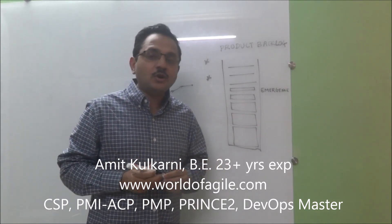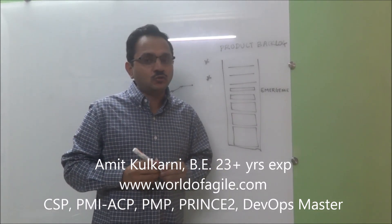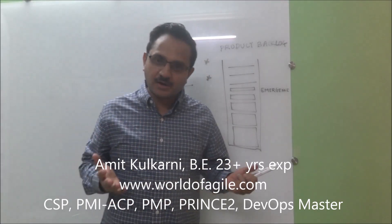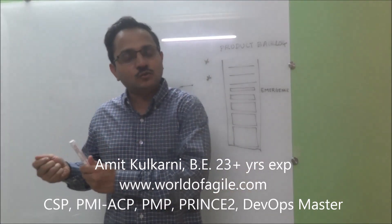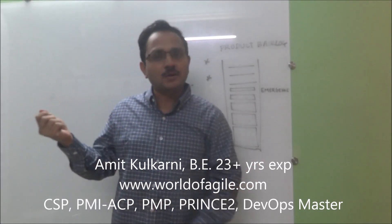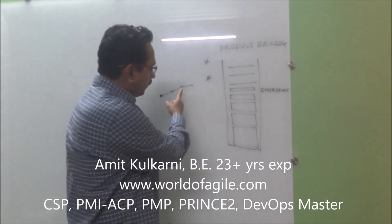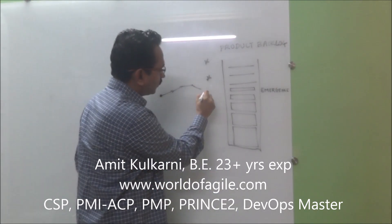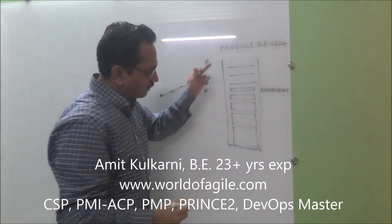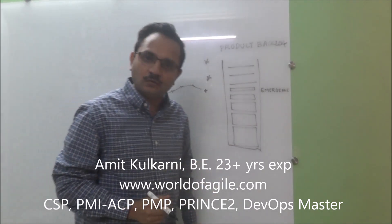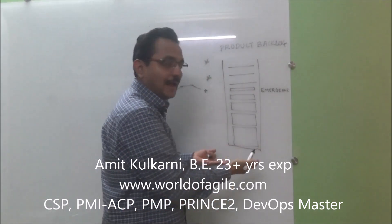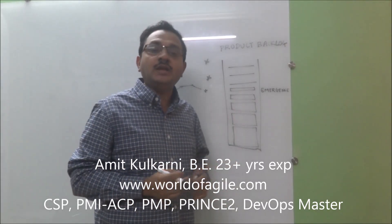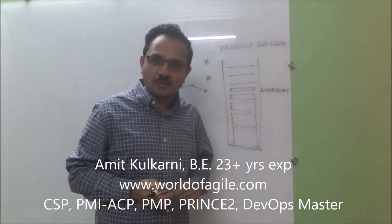In waterfall, we have been used to finalizing our entire scope upfront and then executing that scope to get our product ready. But when we want to go towards continuously changing scope, your Product Backlog also has to evolve — it has to emerge as you go along. This is called emergence of the Product Backlog.